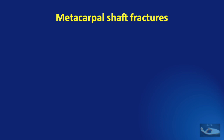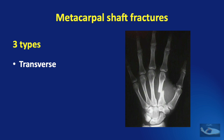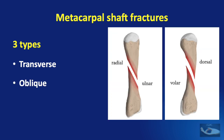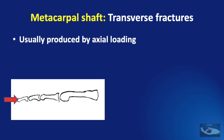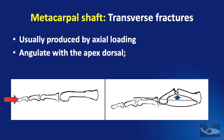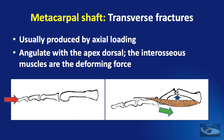Finger metacarpal shaft fractures can basically be divided according to their orientation into three basic types: transverse fractures; oblique fractures, which could be transversely oblique or vertically oblique; spiral fractures, as seen in the second metacarpal bone in this sample x-ray; and comminuted fractures, as seen in the third metacarpal bone in this example. Transverse metacarpal shaft fractures are usually produced by axial loading forces, and the fractures angulate with the apex dorsal. The interosseous muscles, which pull on the volar side, are the deforming force which cause the angulation.